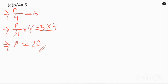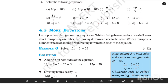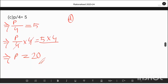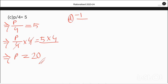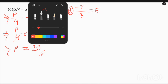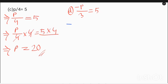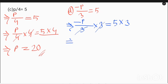Now we move on to question number (d): minus p divided by 3 is equal to 5. We solve this the same way — multiply both sides by 3, so minus p is equal to 5 multiplied by 3, giving minus p is equal to 15, and therefore p is equal to minus 15.